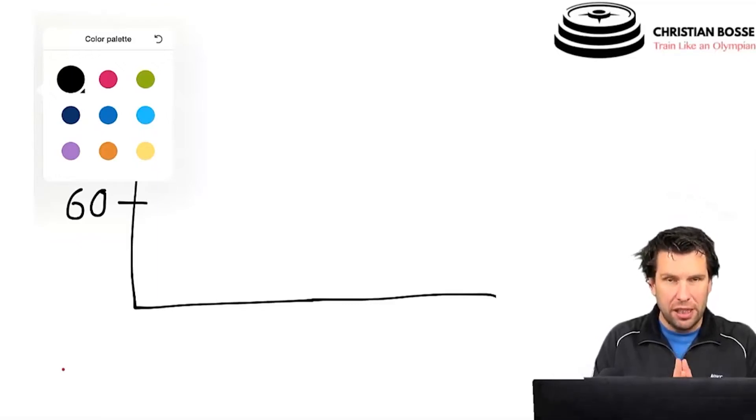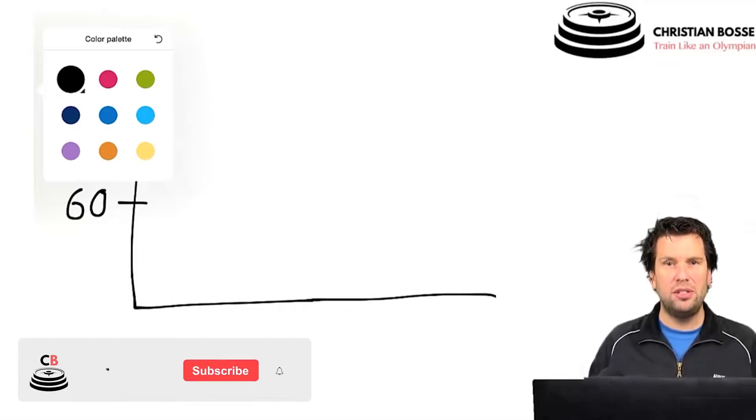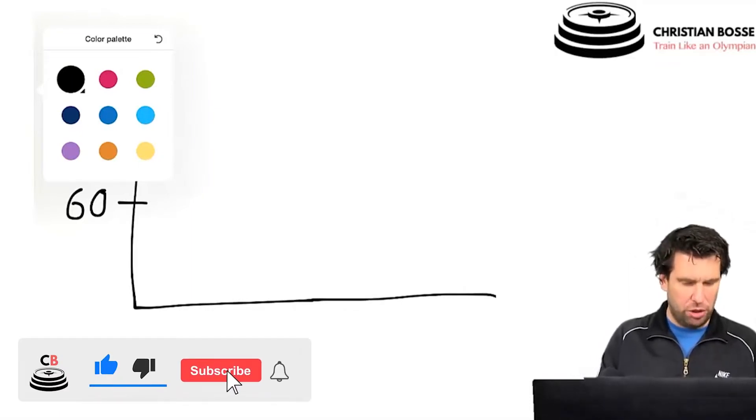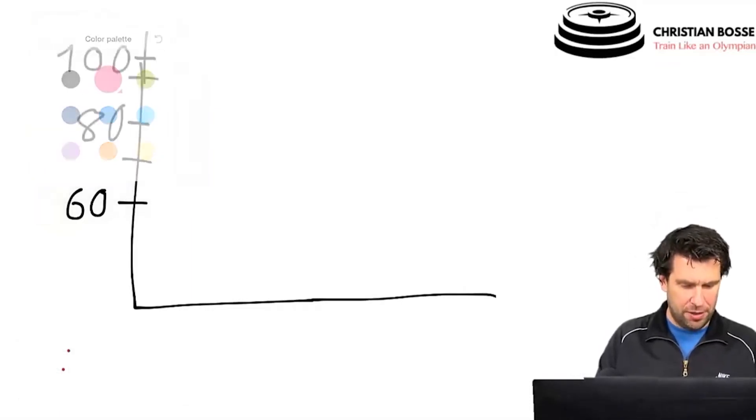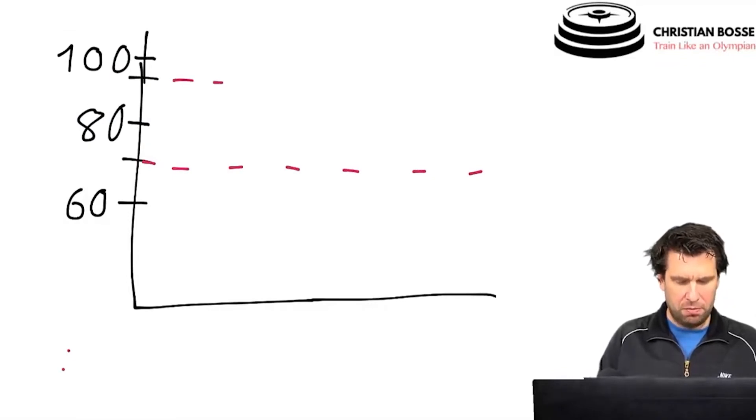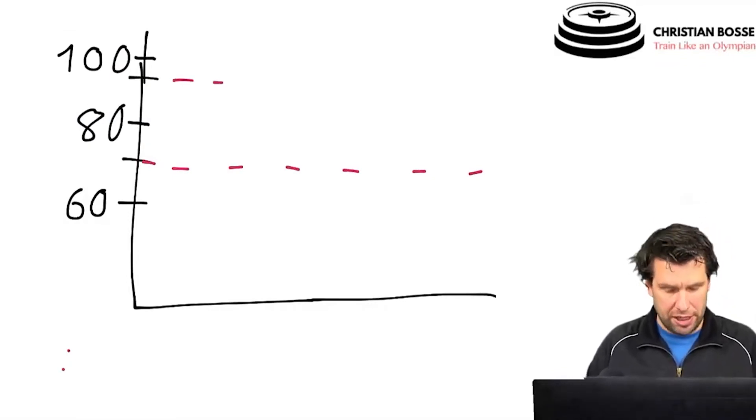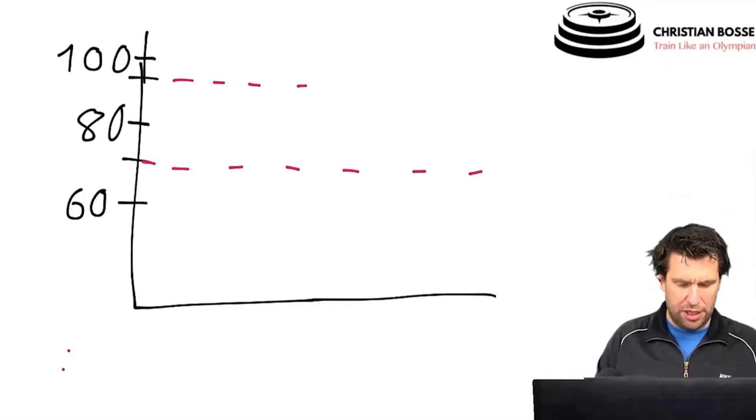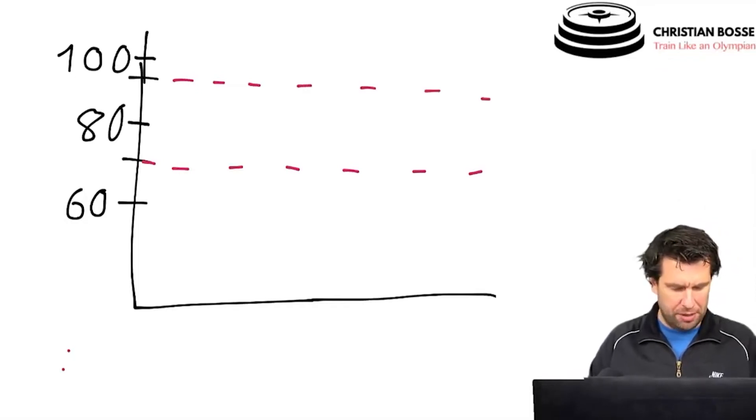It's the intensive interval method where we work from moderate intensity to submaximal intensity. Moderate is defined as 70 to 80%, so this is our lower limit. And the maximal limit of submaximal intensity is 90%. So this is our working limit.